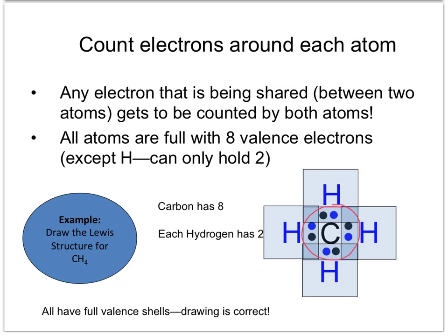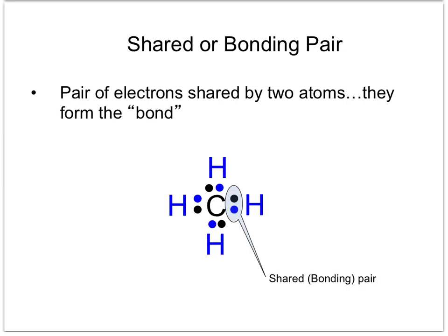Each hydrogen has a duet. Remember that hydrogen, helium, and sometimes lithium need only 2 electrons to be stable. So all atoms have their full valence shells and the drawing is correct. The pair of electrons between the carbon and hydrogen are called a shared pair or a bonding pair.